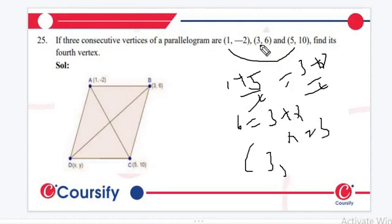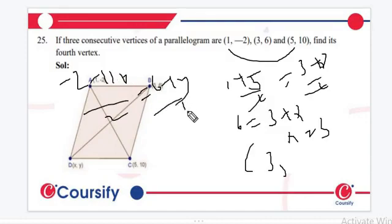Now again finding the value of y. (-2+10)/2 which equals to (6+y)/2. So we can write y must be equal to 2. So 3 comma 2. This will be our answer.